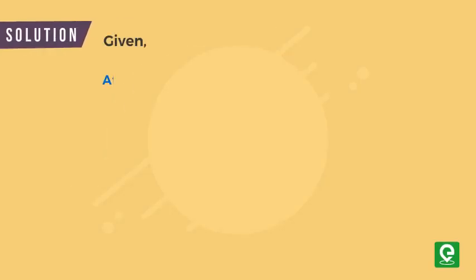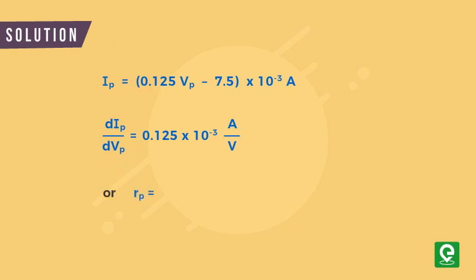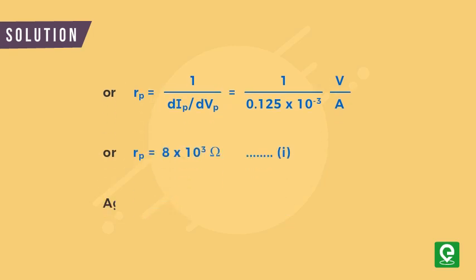Solution: We are given that at grid voltage of -1 volt, plate current I_p = 0.125V_p - 7.5 milliamperes. On differentiating the plate current with respect to plate voltage, we get dI_p/dV_p = 0.125 × 10^-3 A/V. Therefore, plate resistance r_p = 1/(dI_p/dV_p) = 1/(0.125 × 10^-3).